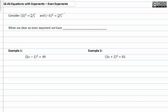When we clear an even exponent we have plus or minus. We always have to remember that there could have been a negative or a positive value that was squared, so we always have to remember to include a plus and a minus.